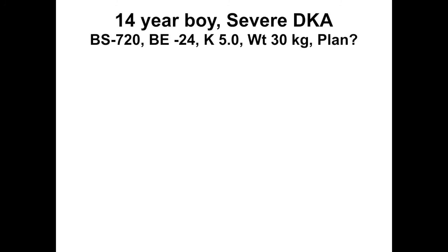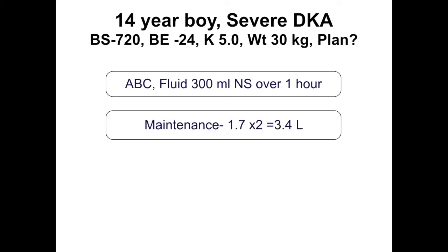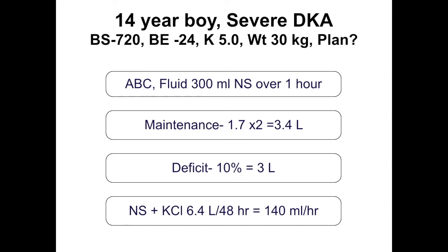Illustrative case: a 14-year-old boy with severe DKA, very high blood sugar, severe metabolic acidosis, potassium of 5, weight 30 kg. Management plan: assess airway, breathing, circulation, give 10 ml/kg normal saline over 1 hour. Calculate maintenance over 48 hours — 3.4 liters. Calculate deficit at 10% — 3 liters. Add both and distribute evenly over 48 hours with potassium chloride 40 mmol/L at 140 ml/hour.